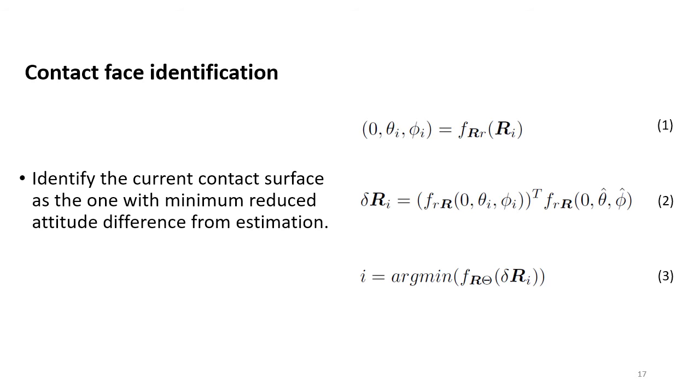In the first equation, Ri represents the attitude of the vehicle when its face i is contacting the ground with a zero-yaw angle. We compute this for all 20 faces and store it in the controller. When identifying the contact face, the controller will compute the attitude difference between the current estimated roll-pitch pair and the pre-computed reduced roll-pitch pair of all faces. It will then identify the contact face as the one with minimum attitude difference.